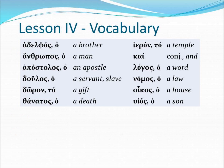Now in Lesson 4, we are going to focus our attention on the Greek noun. Here is a list of 12 simple nouns. While the Greek verb consists of tense, voice, mood, person, and number, the Greek noun consists of only three elements: gender, number, and case.